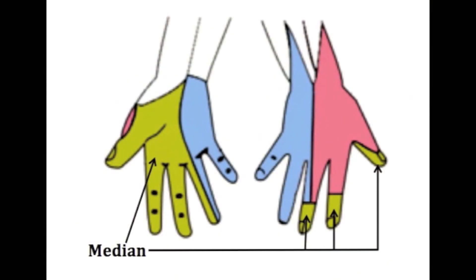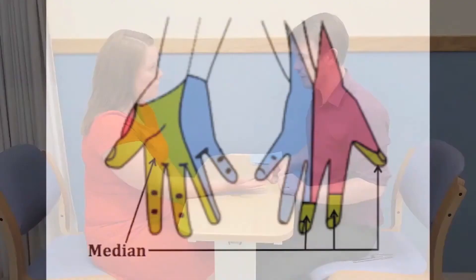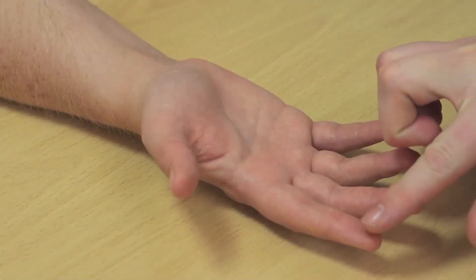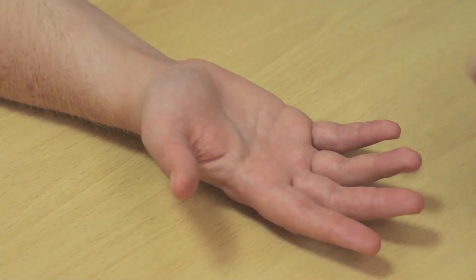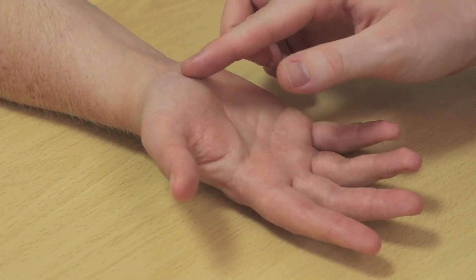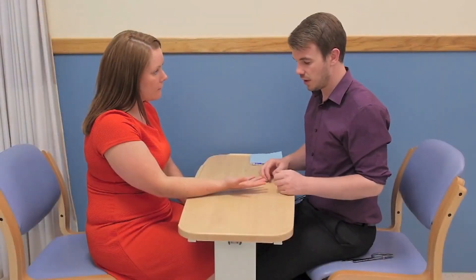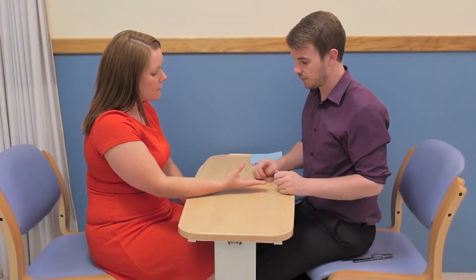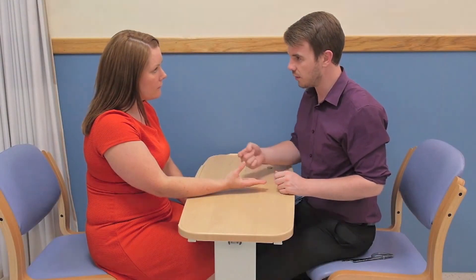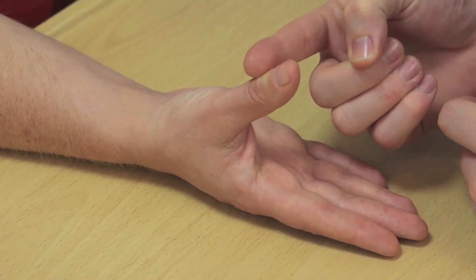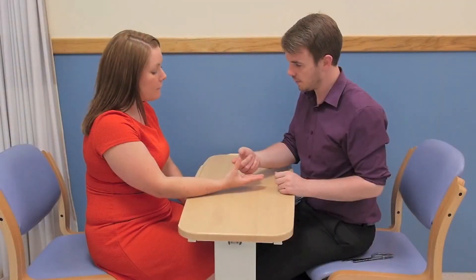The median nerve supplies sensation to the palmar aspect of the radial three and a half digits. Test sensation at the tip of the index finger and the base of the thenar eminence. Test motor power by assessing the abductor pollicis brevis muscle. With the palm up, ask the patient to point their thumb towards the ceiling and resist you whilst you exert a downward force.